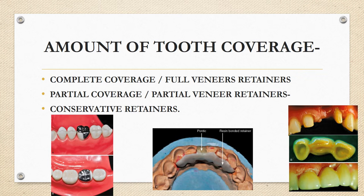Complete coverage retainers cover all the surfaces of the abutment teeth and are the ideal retainer as they provide maximum retention. In the diagram, the retainers cover all surfaces of the abutment — hence they are known as complete coverage or full veneer retainers. They are the most commonly used retainers for FPD and are the retainers of choice for extensively damaged abutment teeth.